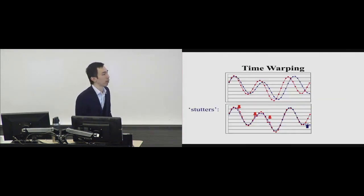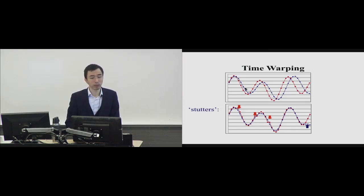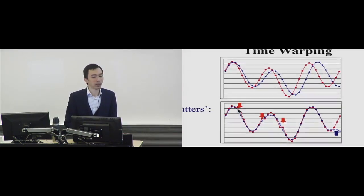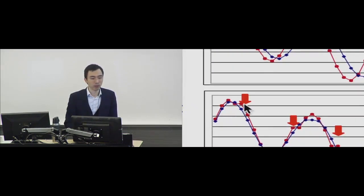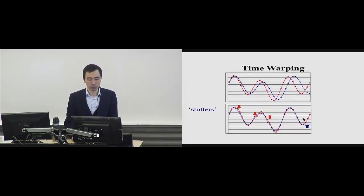Pictorially, dynamic time warping takes two waveforms — red and blue — where the blue is a stretched version of the red. The algorithm adds repetitions or delays into one of the time series to match the other. When values are close enough, you proceed diagonally; when there's a significant difference, you repeat one value to stretch it slightly until they align.